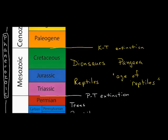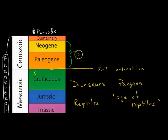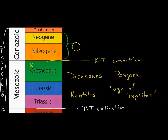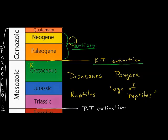You might be wondering why it's called the K-T extinction. The 'K' stands for Cretaceous, and the 'T' refers to the Tertiary — a section of time that was previously known as the Tertiary period. It has since been divided into two others: the Paleogene and the Neogene. But it's still known as the K-T extinction because it occurred between the Cretaceous and the Tertiary.